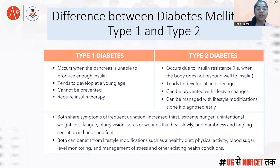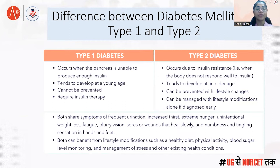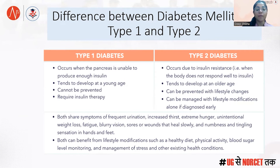Type 1 cannot be prevented; type 2 also cannot be prevented, but with lifestyle modifications you can alter your blood sugar level. Type 1 requires insulin therapy, whereas type 2 requires lifestyle modification along with oral glycemic drugs. At a later, uncontrollable stage, patients with type 2 diabetes mellitus may also have to take insulin. Both types share symptoms of frequent urination, increased thirst, extreme hunger, unintentional weight loss, fatigue, and blurry vision.